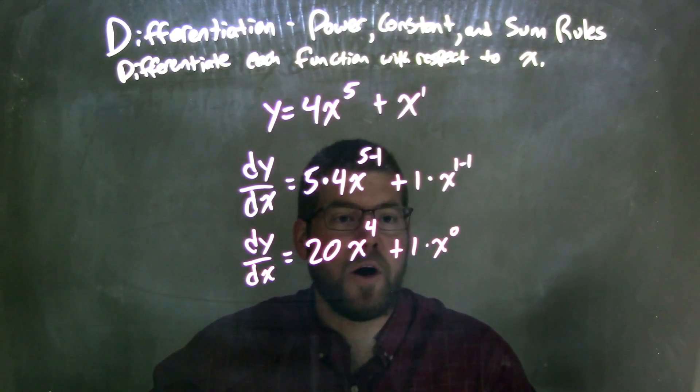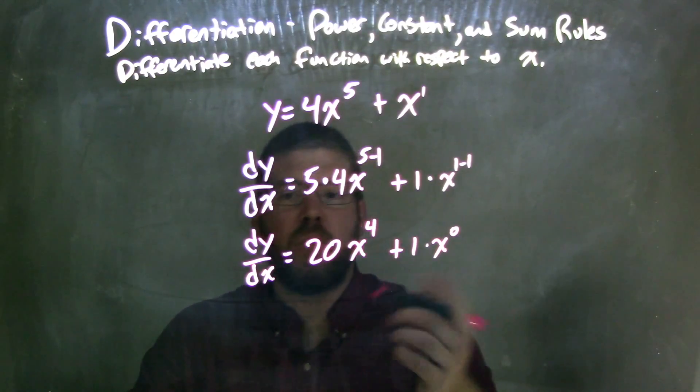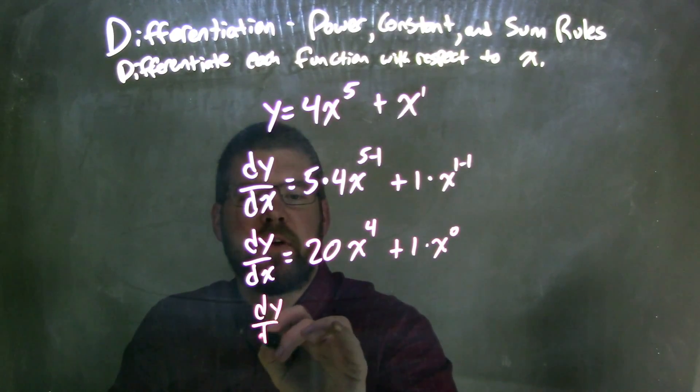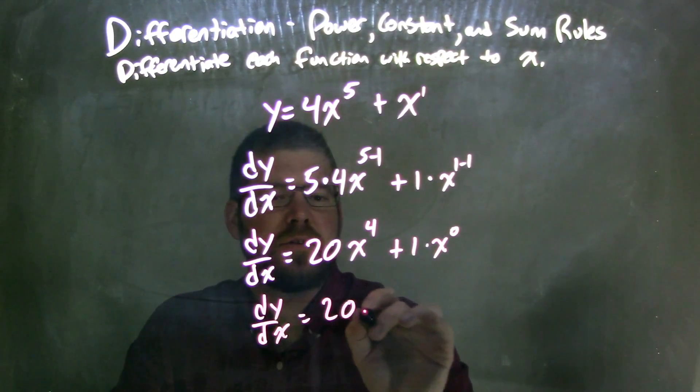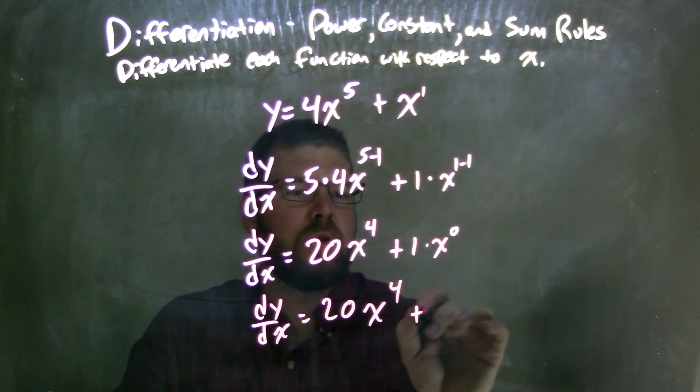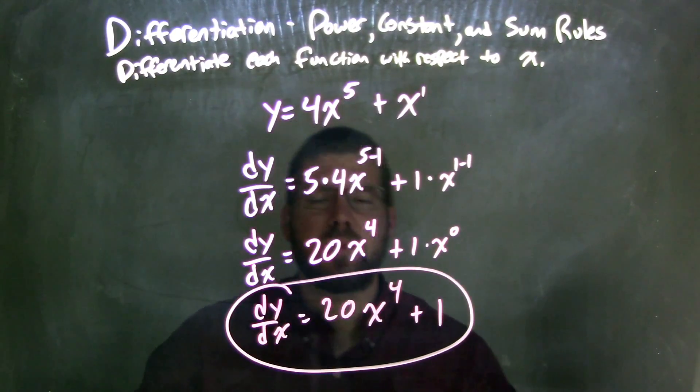Well, anything to the 0 power is just 1, correct? And 1 times 1 is 1. So if I want to rewrite this finally, just to make my final answer, 20x to the 4th plus 1. There we go.